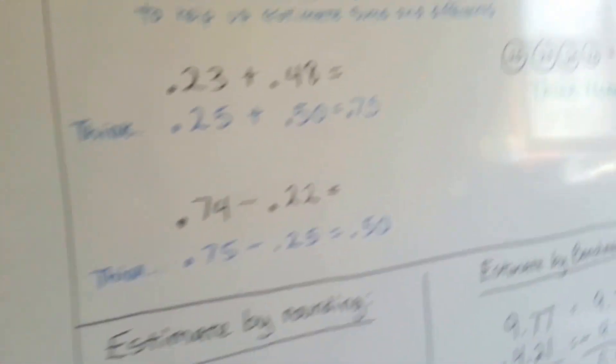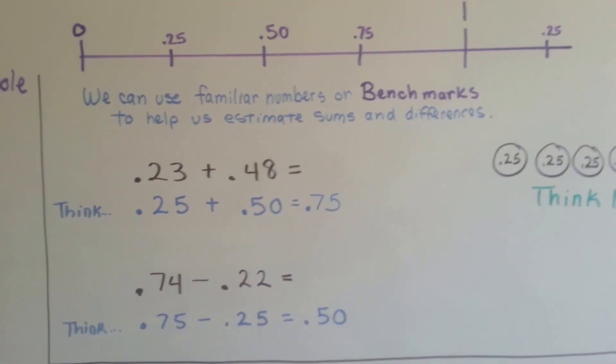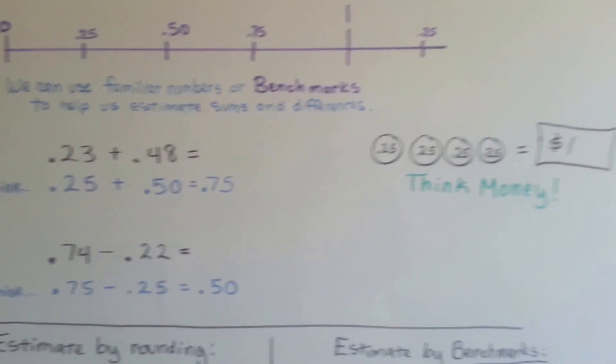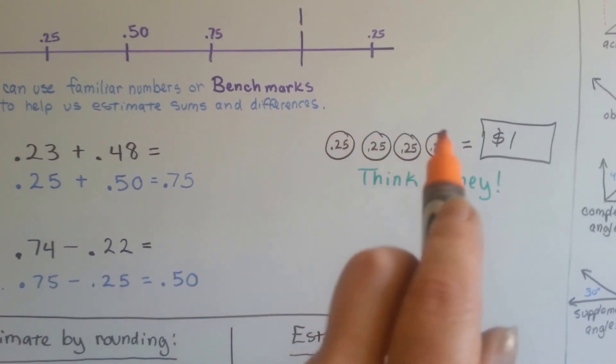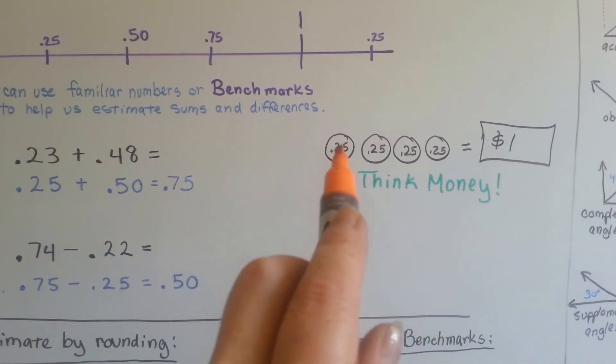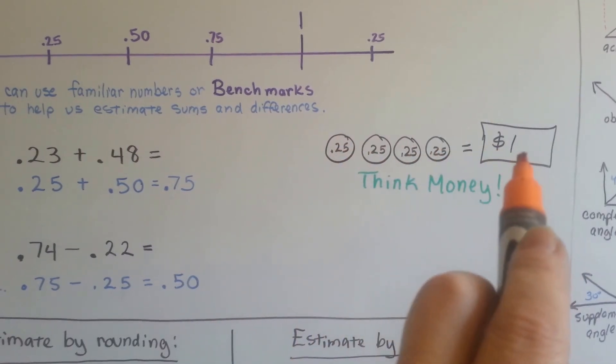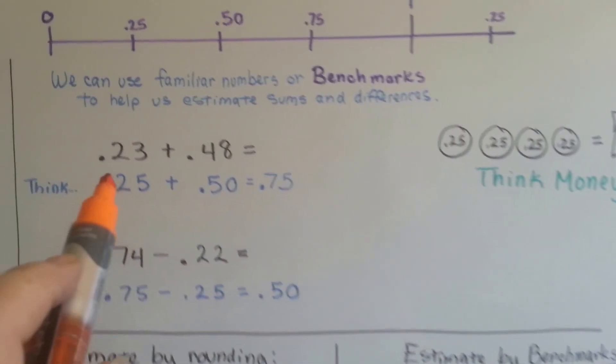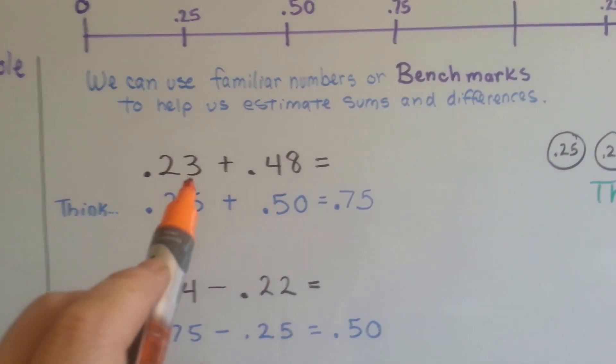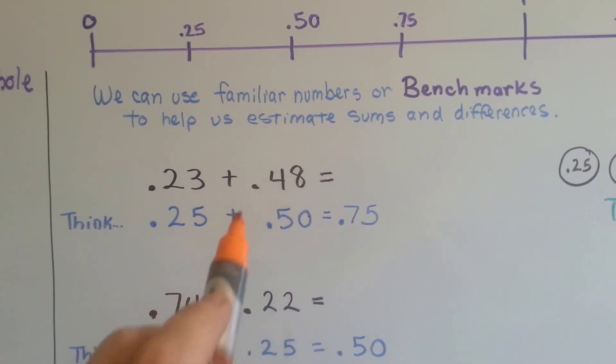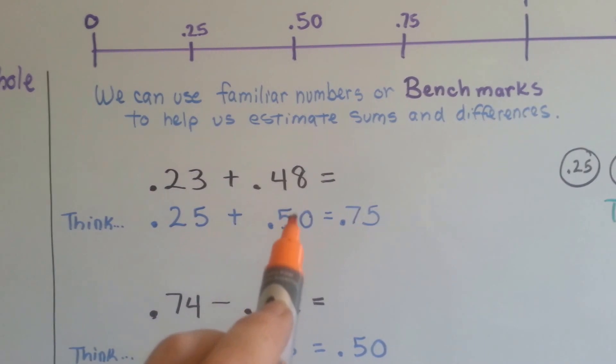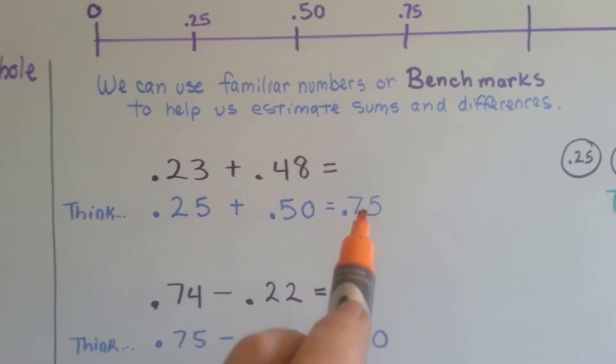We can also use familiar numbers or benchmarks to help us estimate sums and differences. If you think money, that 4 quarters equal $1, you'll think 4 25s equal $100. So if you needed to add 23 hundredths plus 48 hundredths, you could think money and think 1 quarter plus 2 quarters equals 3 quarters.